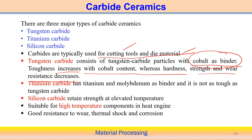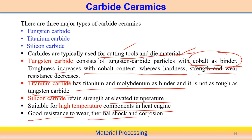Titanium carbide has titanium and molybdenum as binder elements. It is not as tough as tungsten carbide. Silicon carbide has very high strength and can retain strength even at elevated temperature. That is why it is used for high-temperature applications, specifically in heat engines. Silicon carbide also has good resistance to wear, can resist thermal shock, and has good corrosion resistance.